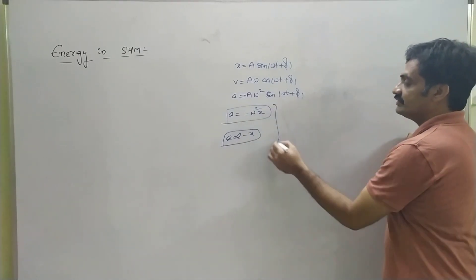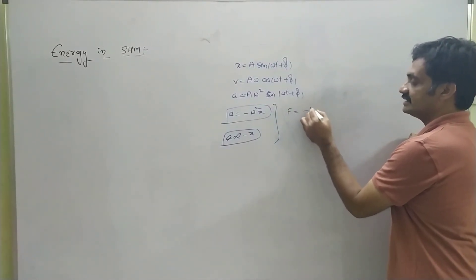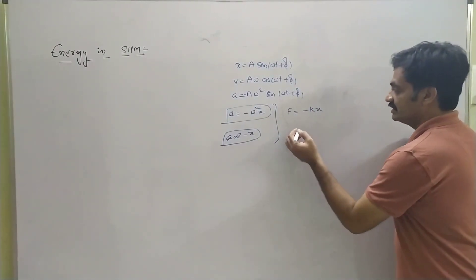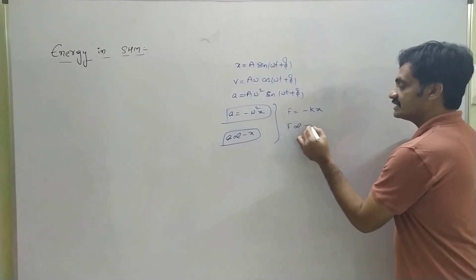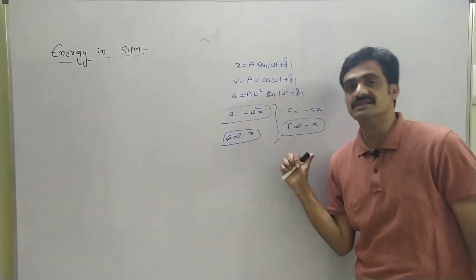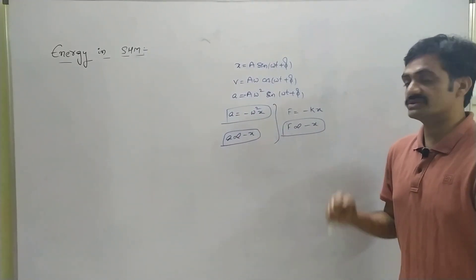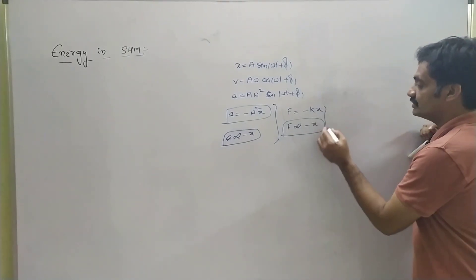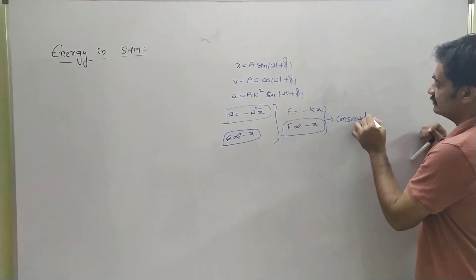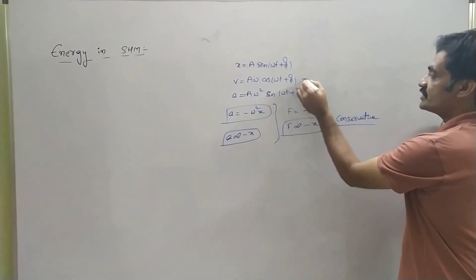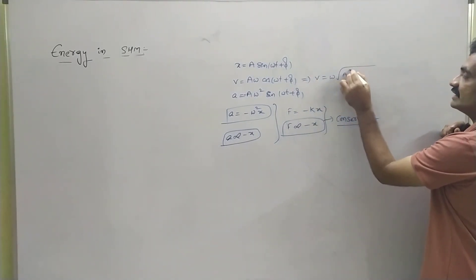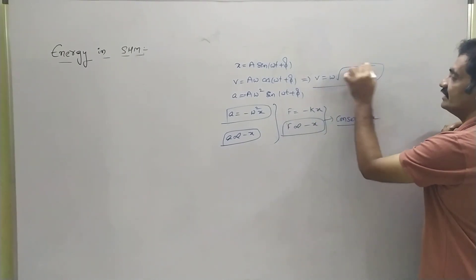Based on that, acceleration is directly proportional to displacement in the opposite direction. The force is represented as F equals to -kx, so force is directly proportional to -x. The force acting in SHM is directly proportional to displacement in the opposite direction, so we can consider this force as conservative. One more equation for velocity is v equals to ω times the square root of (A² - x²).